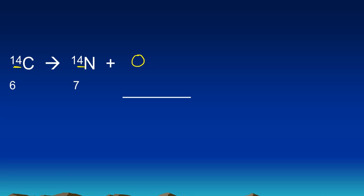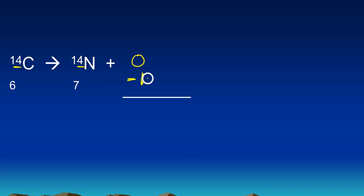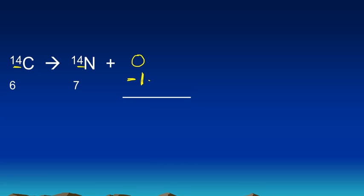Well if you said negative 1, you are correct, because they both have to add up to 6 and we have a 7. So negative 1 makes it add up to 6 on both sides. Now what has a symbol 0 over negative 1? Well that is, I hope you will remember, is a beta particle. So we're going to put the Greek letter beta there to show that this is called beta emission. When you have a beta particle as a product we call that beta emission or beta particle emission.